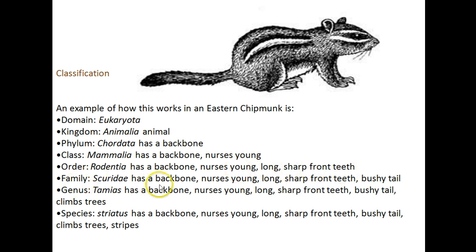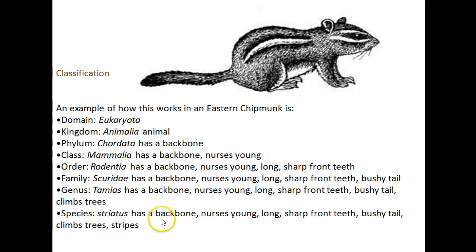The family: it has a backbone, nurses its young, long sharp front teeth, and a bushy tail. The genus: backbone, nurses young, long sharp front teeth, bushy tail, climbs trees. And then the species: backbone, nurses young, long sharp front teeth, bushy tail, climbs trees, and has stripes. And that would be its classification.